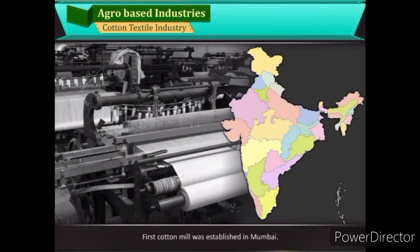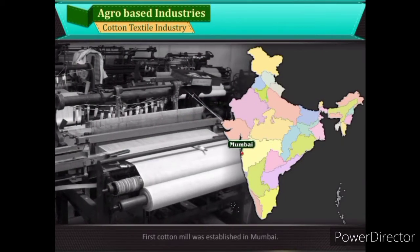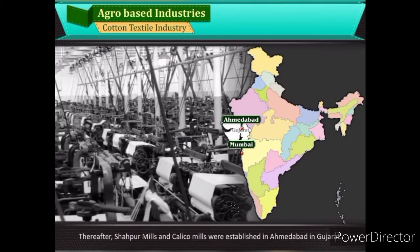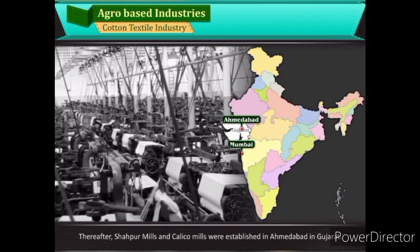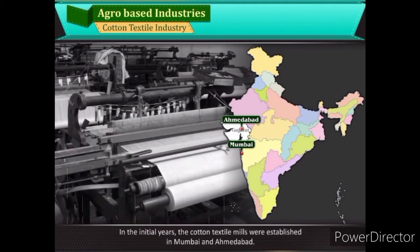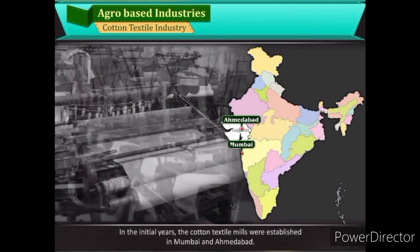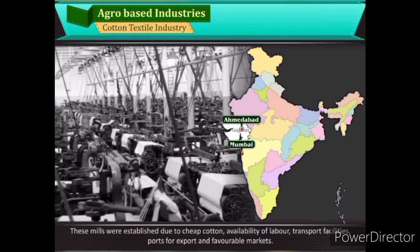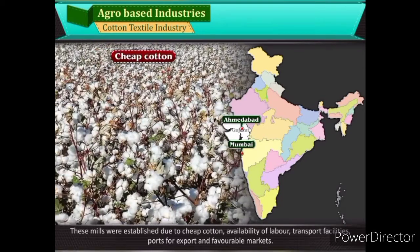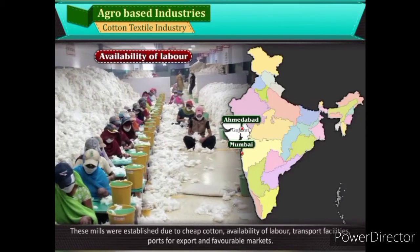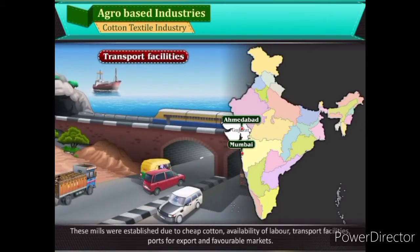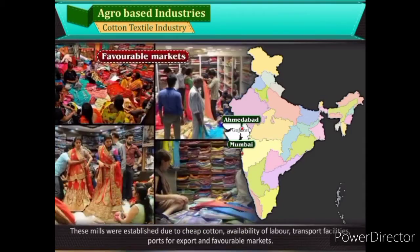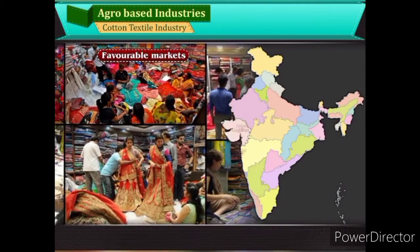The first cotton mill was established in Mumbai. Thereafter, Shahpur Mills and Calico Mills were established in Ahmedabad in Gujarat. In the initial years, cotton textile mills were established in Mumbai and Ahmedabad. These mills were established due to cheap cotton, availability of labour, transport facilities, ports for export, and favourable markets. Today, cotton textile mills are located in about 100 cities of the country.